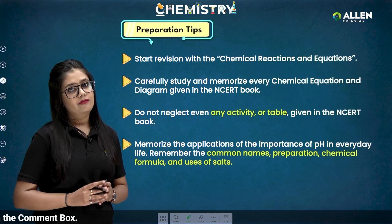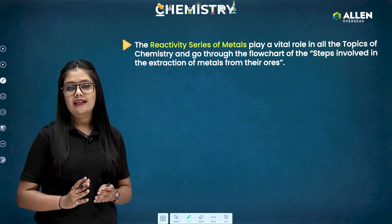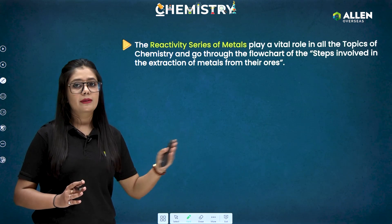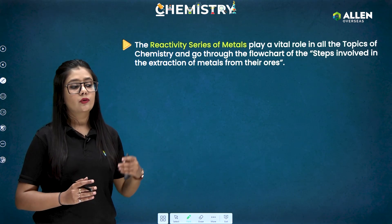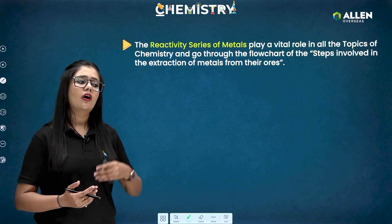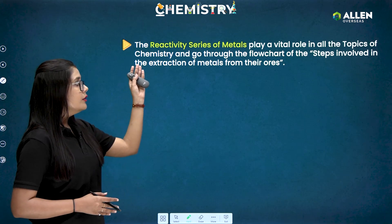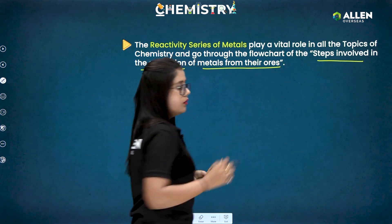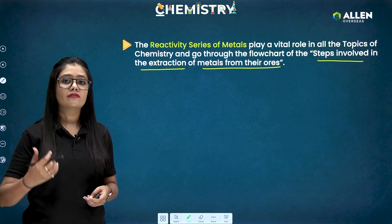From the chapter metals and non-metals, go through the reactivity series of metals very thoroughly, as it will help you in every chapter — from displacement and double displacement reactions in chapter one, to chemical properties in chapters two and three, and parts of chapter four. Also go through the flowchart of the steps involved in the extraction of metals from their ore given in the NCERT book, which will ease out your revision of metallurgy.